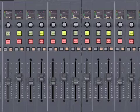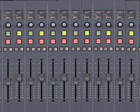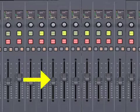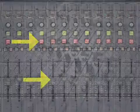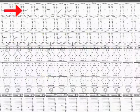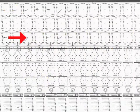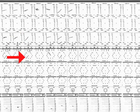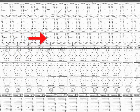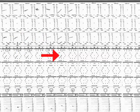Unfortunately, on most of the early automated consoles, the automation was limited to only volume and mute. The mix engineer therefore needed to make detailed notes indicating how everything else — both onboard and outboard — was configured, in case the session needed to be redone in the future.